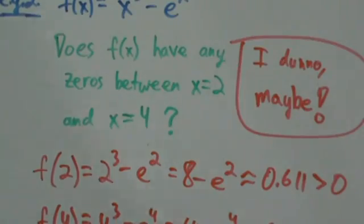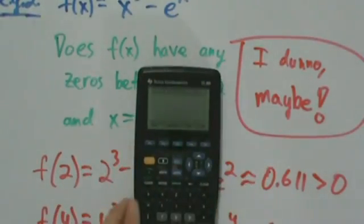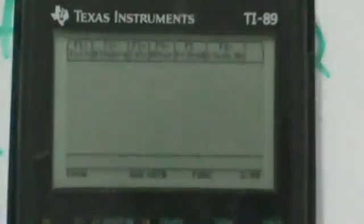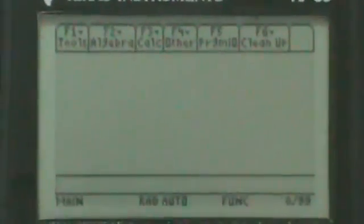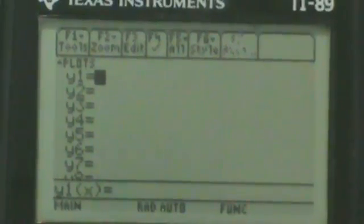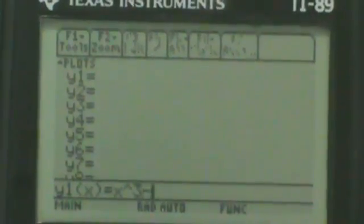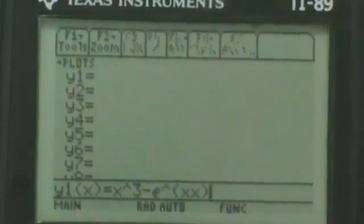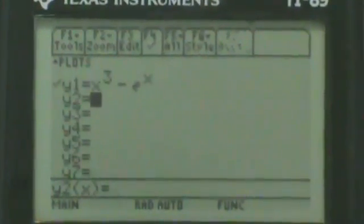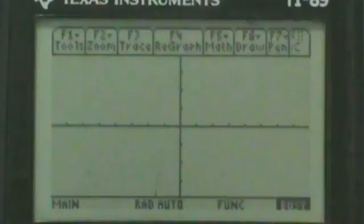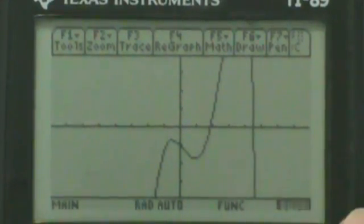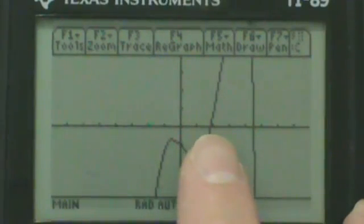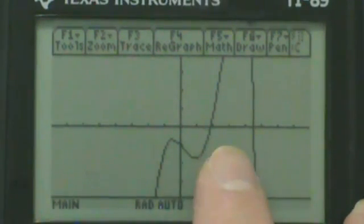So let's just take a look at a graph real quick. We'll zoom in here. We'll go to the equation editor, so our function is x cubed minus e to the x. So now let's go ahead and graph that.